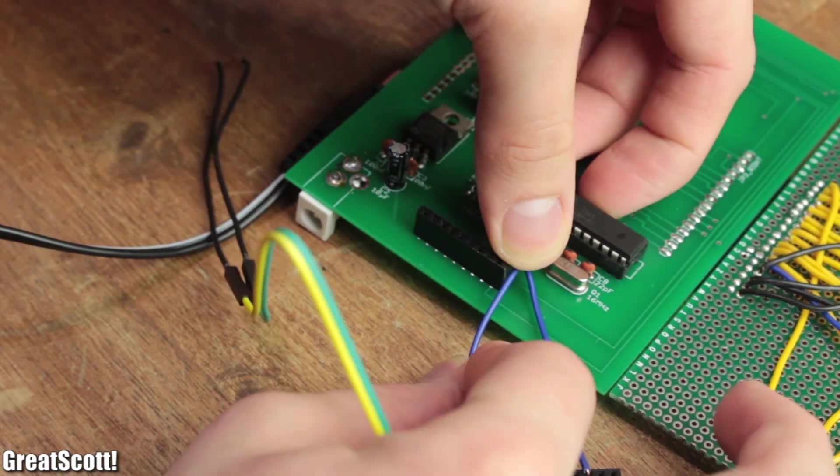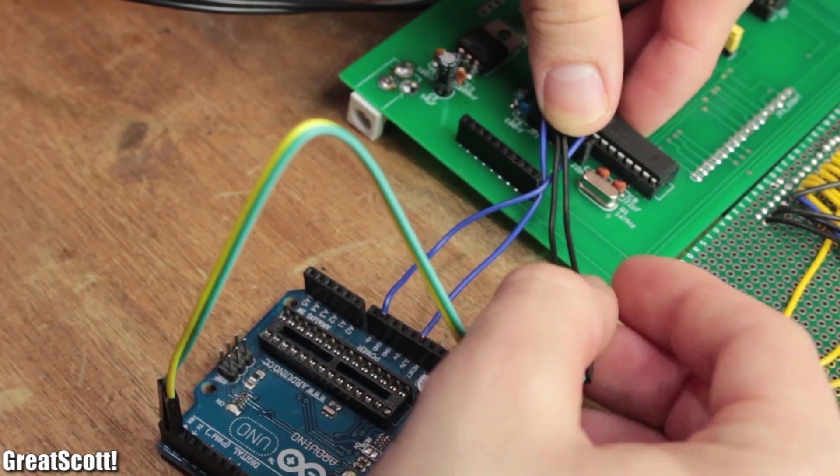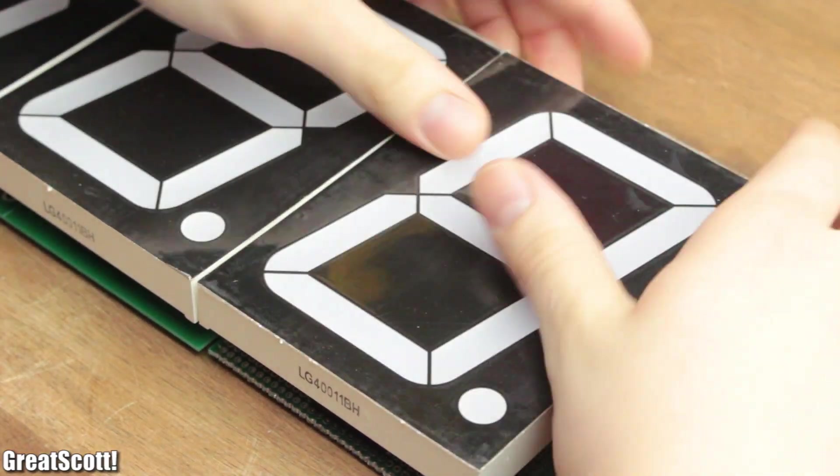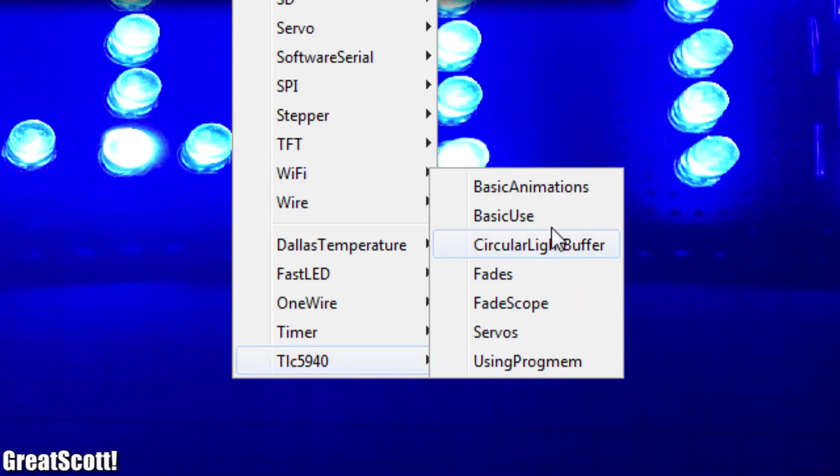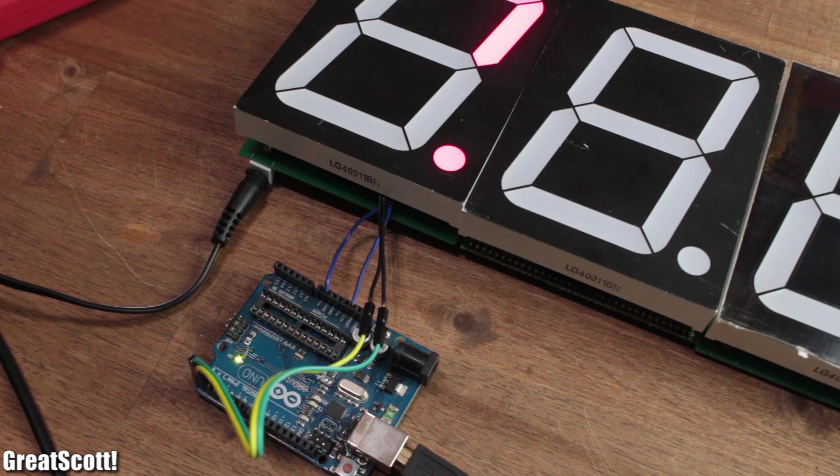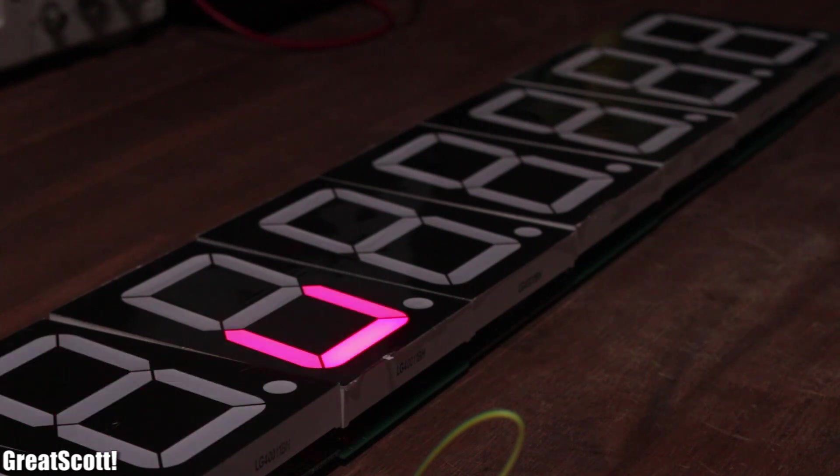So I connected my Arduino Uno to the microcontroller in this configuration and plugged in all the displays. For the first test I simply uploaded a TLC example sketch which should simulate the Knight Rider light and it seems like it works.